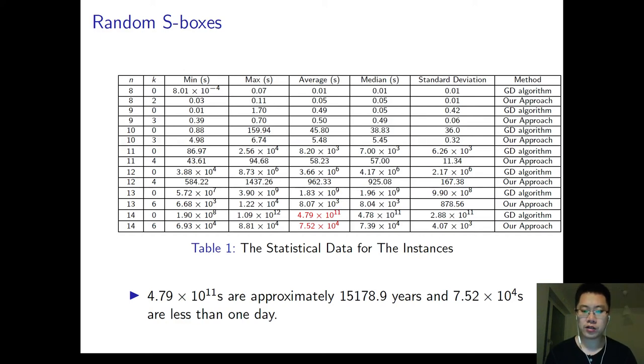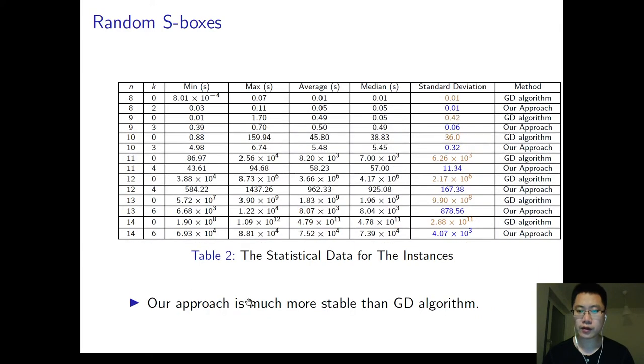It is amazing results because we could recover a random 14-bit S-Box in no more than one year. Well, for the GD algorithm, the process is very time-consuming and takes more than 15,000 years. And from the standard deviation, we can see that our approach is much more stable than the GD algorithm.